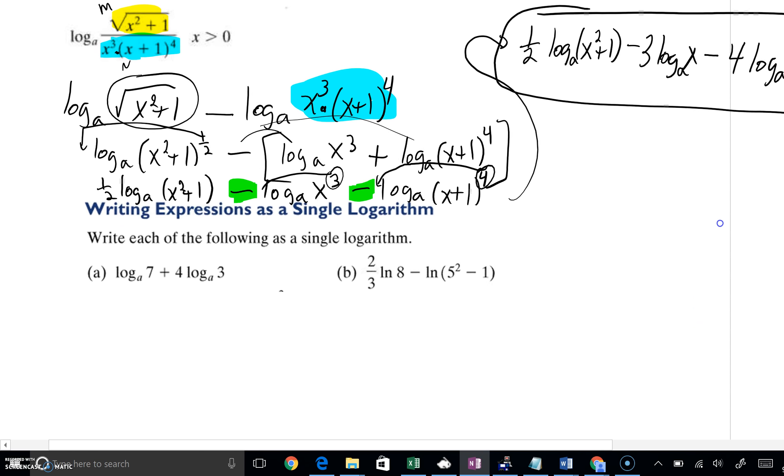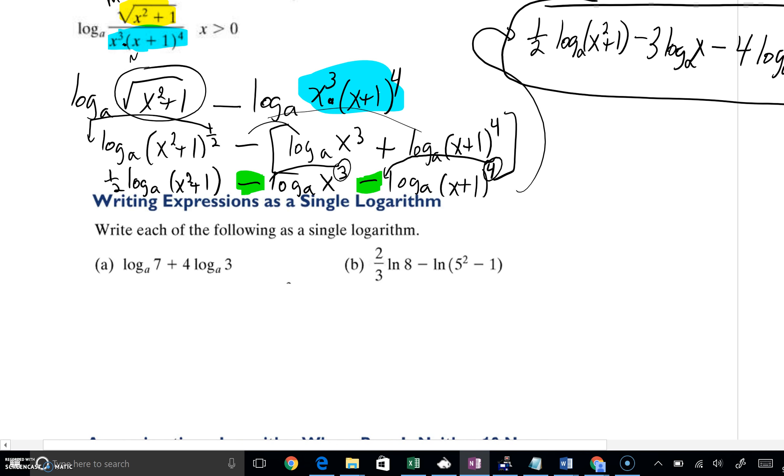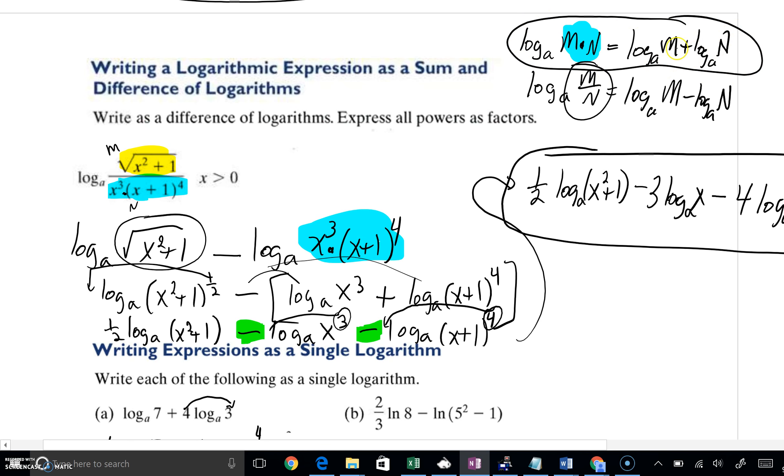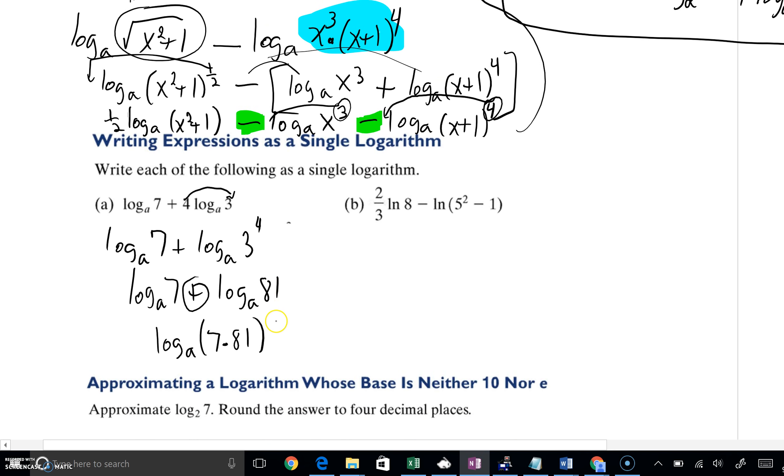Here we have a problem where our directions are to write as a single logarithm. Could we condense? First of all, working backwards, look at any coefficients and bring them up. This will become log base A of 7. This becomes log base A of 3 to the 4th. Now, 3 to the 4th you could work out very quickly is really just 81. But an addition of 2 logs, we may condense into 1 log and multiply their insides. We're really going to this top property right here. We're working from the right side to the left side. And we all can quickly work out 7 times 81 would be 567. So it's log base A of 567.